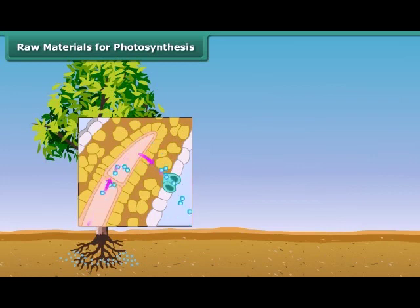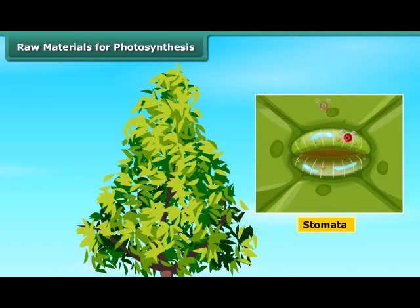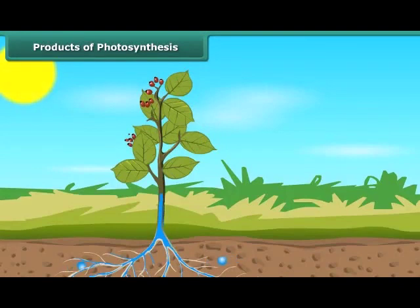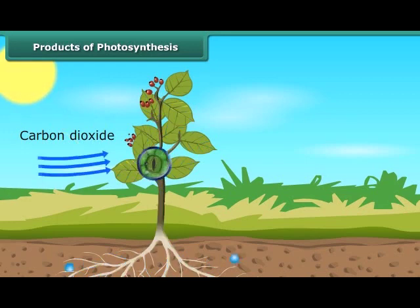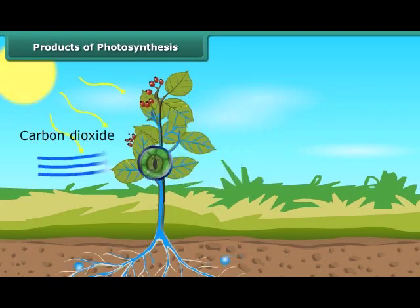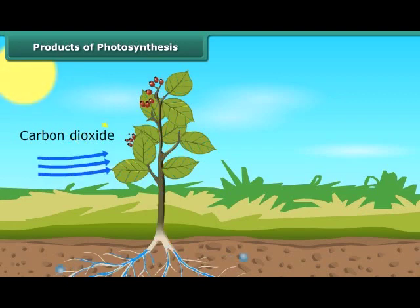Carbon dioxide from air is taken in through tiny pores present on both surfaces of the leaves. Such pores are called stomata, and these pores are surrounded by guard cells. After reaching the leaf, carbon dioxide and water react in the presence of sunlight to form carbohydrates.